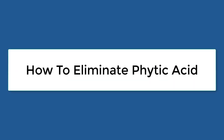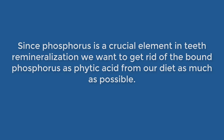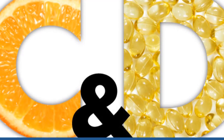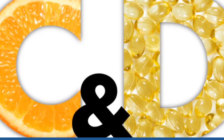How to eliminate phytic acid? Since phosphorus is a crucial element in tooth mineralization, we want to get rid of the bound phosphorus from phytic acid in our diet as much as possible. If for some reason you can't eliminate it, then supplementing with vitamins C, D, and calcium will be required to block phytic acid's effect.